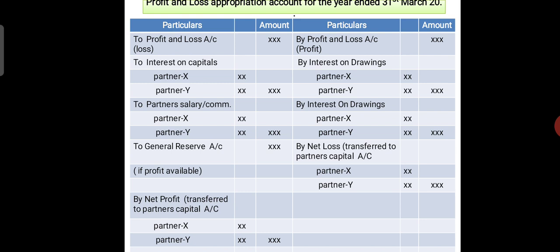In the specimen of the profit and loss appropriation account, on the credit side, if there are two partners (Partner X and Partner Y), we show interest on drawings for Partner X and Partner Y. In case of a loss, that is distributed between the two partners. On the debit side: interest on capital for Partner X and Partner Y, partner salary and commission, general reserve, and any remaining balance distributed to partners.